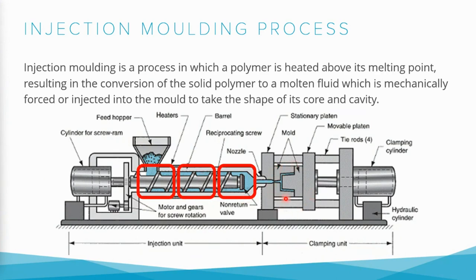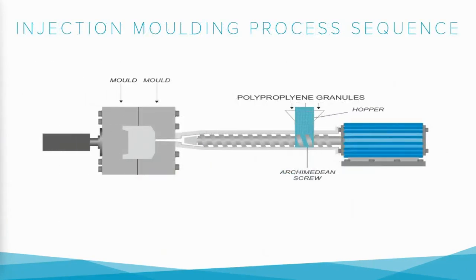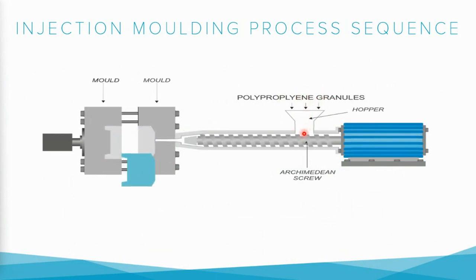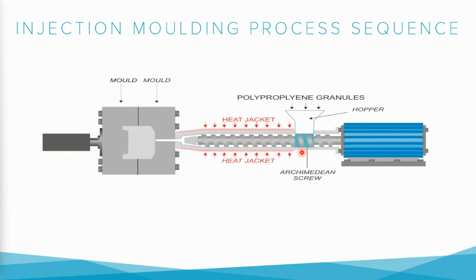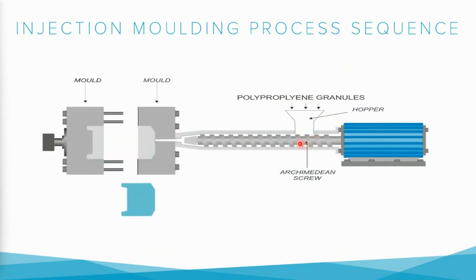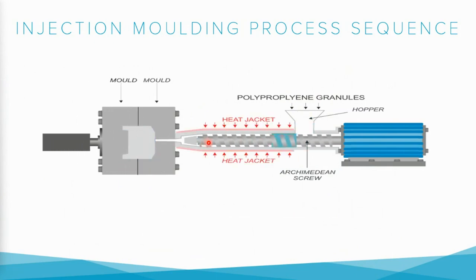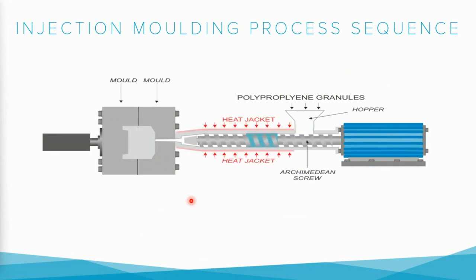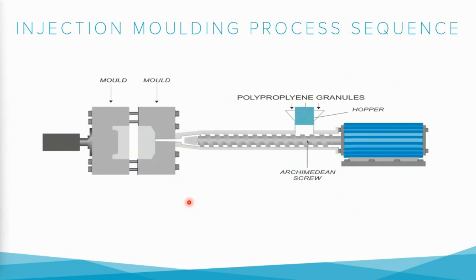This side of the mold is called the core and this side is called the cavity. We feed polypropylene granules into the hopper; the material goes into the heated barrel and the screw conveys the material from the feed zone towards the metering zone, pushing it into the mold. Once the mold is filled with plastic material, cooling starts. Once cooled, the plastic material solidifies and the product is ejected.